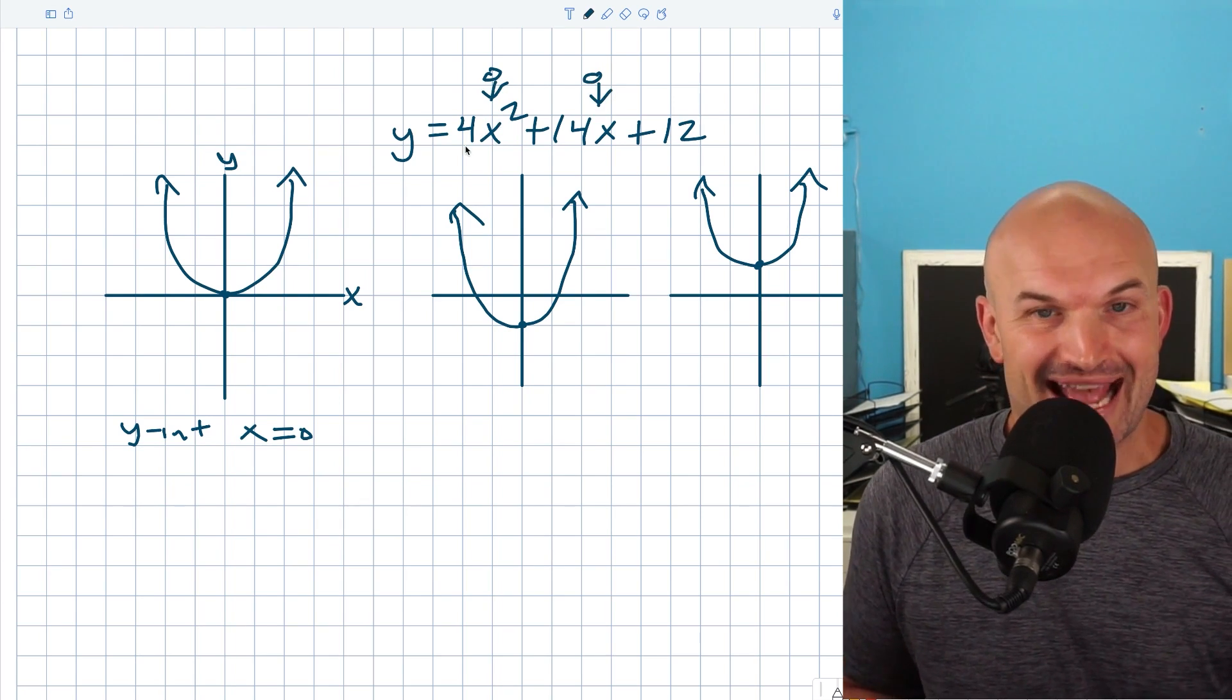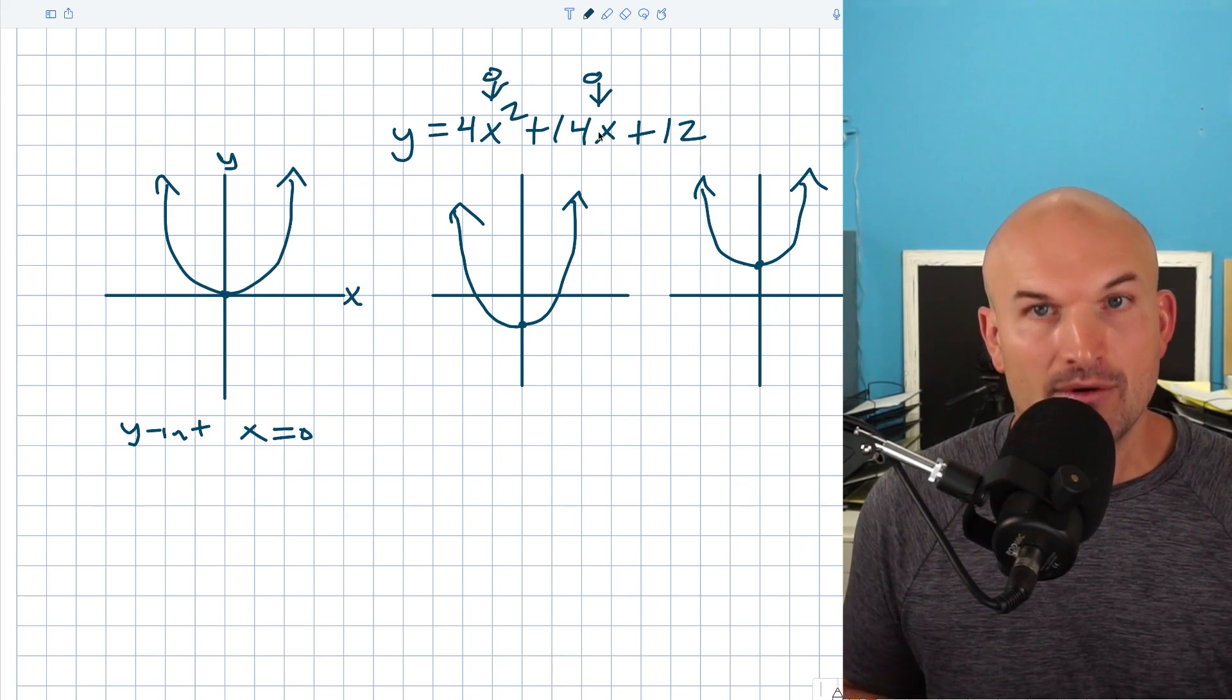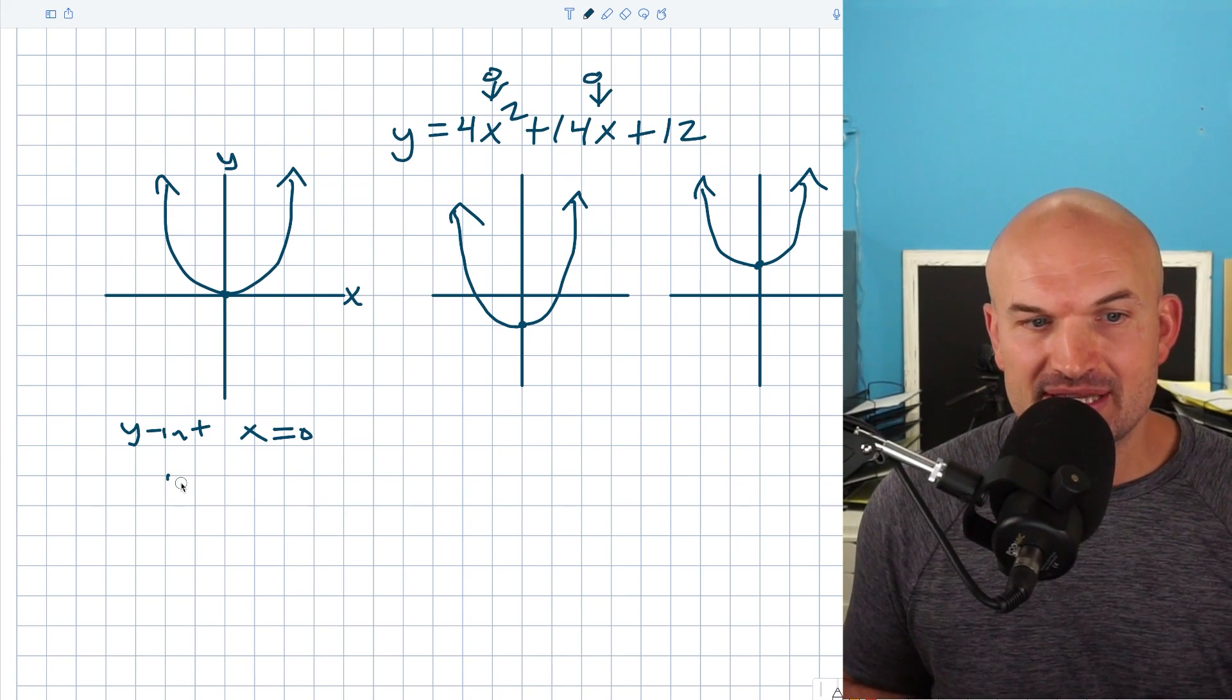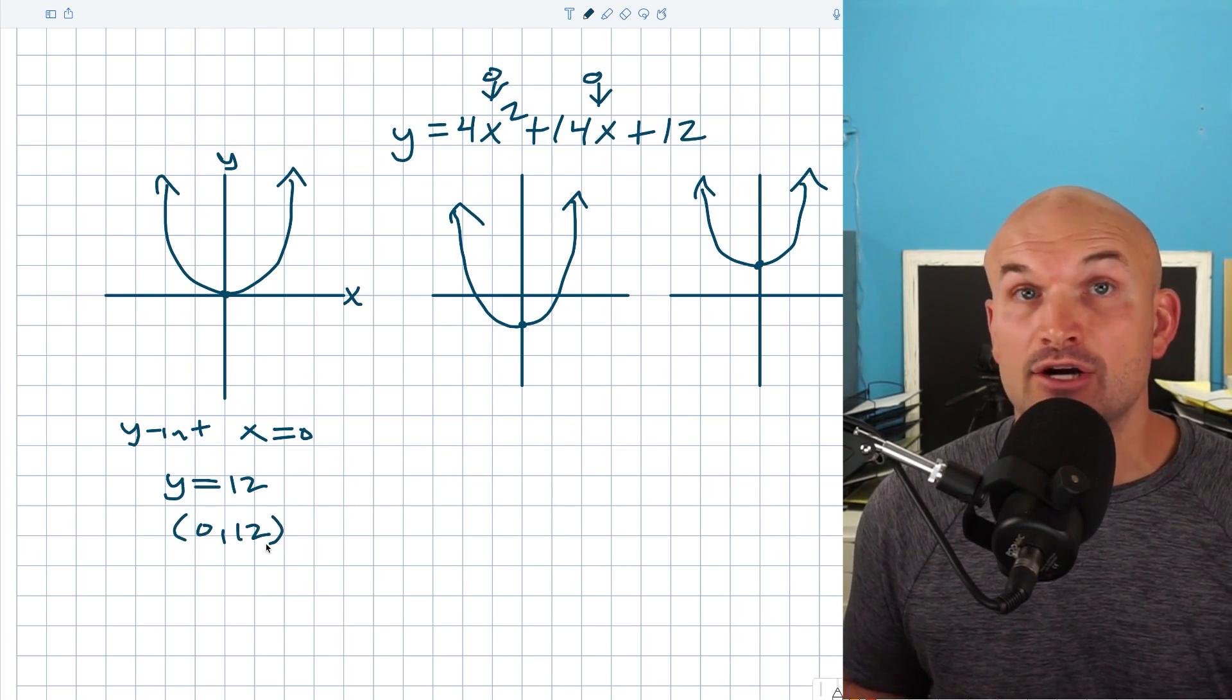Well, guess what? Zero times anything is going to be zero. So basically, I'm going to have zero plus zero plus 12. So my y-intercept in this case is going to be y equals 12, which we can also write as a coordinate point of (0, 12).